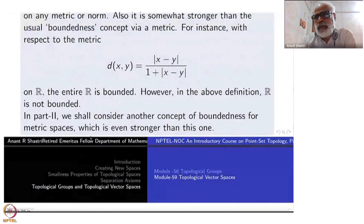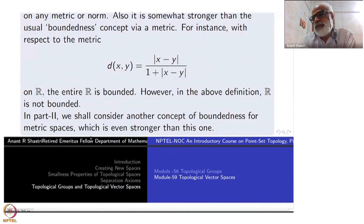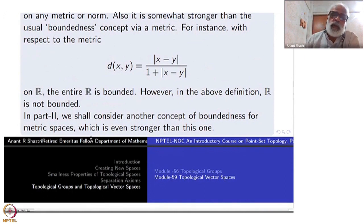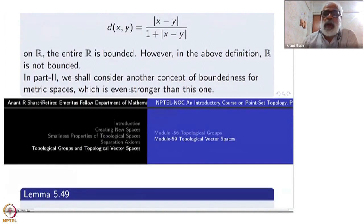In the second part we shall consider another concept of boundedness for metric spaces which is even stronger — it will be called total boundedness, and that name is quite justifiable. That will be done in part two.